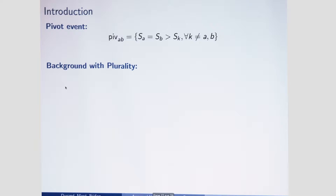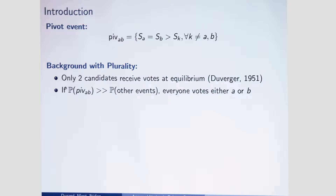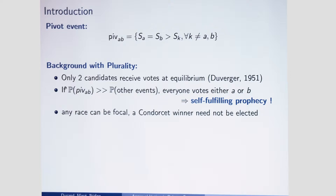What do we know about plurality voting? In plurality voting, we know well how it works — it is pretty simple. The equilibria are ones in which only two candidates receive votes at equilibrium, and this has been known since the 1950s. If you assume the pivotal event where A and B are tied at the top is much more likely than all other pivotal events, then all voters want to vote for A or B accordingly, creating a self-fulfilling prophecy. As a result, any race between any pair of candidates can be focal, and the outcome may be unrelated to preferences. In particular, if there exists a Condorcet winner, it might not be elected by plurality rule.